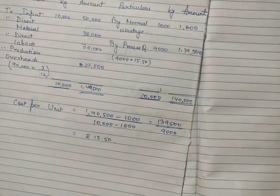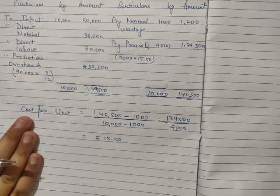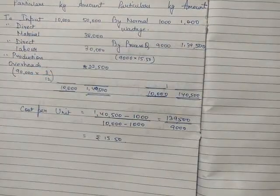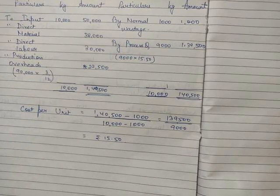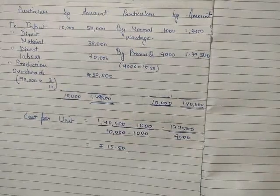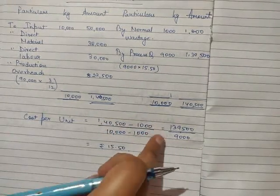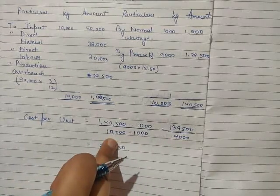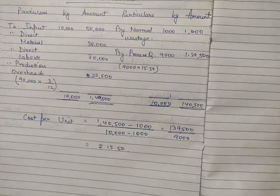So we have prepared the process P account. All the costs appear on the left side. The scrap value of the normal wastage is reduced from the total cost to arrive at the costs incurred in process P. The output to be transferred to process Q is measured at total cost incurred minus scrap value divided by the good units, that is total input of 10,000 kg minus normal loss of 1,000 kg.